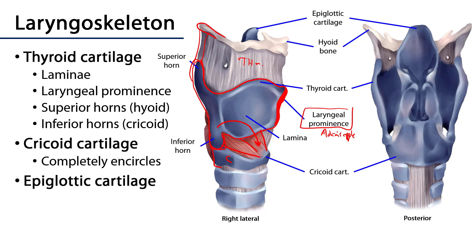The cricoid cartilage — cricoid comes from 'cricios,' meaning a ring — is the only cartilage to completely surround the airway within the larynx; it is 360 degrees complete. Posteriorly upon the cricoid cartilage is where the arytenoid cartilages sit. The epiglottic cartilage has a stem and a leaf, and it articulates anteriorly with the thyroid cartilage. It forms a good part of the laryngeal inlet, along with the aryepiglottic folds and the corniculate cartilages atop the arytenoid cartilage. The laryngeal inlet allows gas exchange between the larynx and the laryngopharynx.